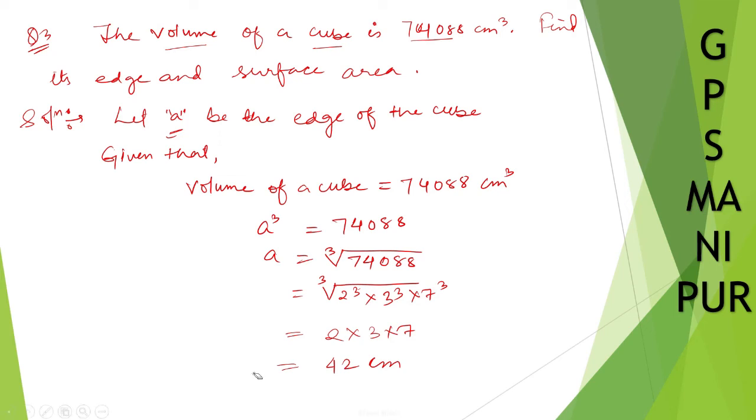Now we need to find the surface area. Therefore, surface area = 6a² = 6 × 42².